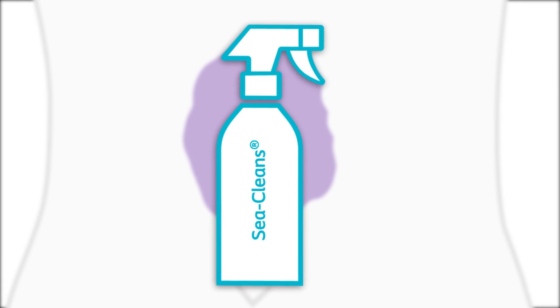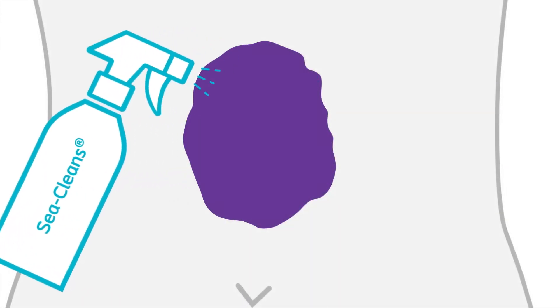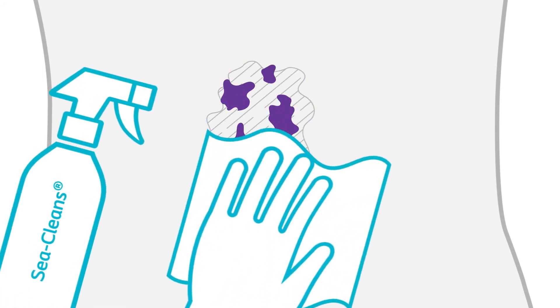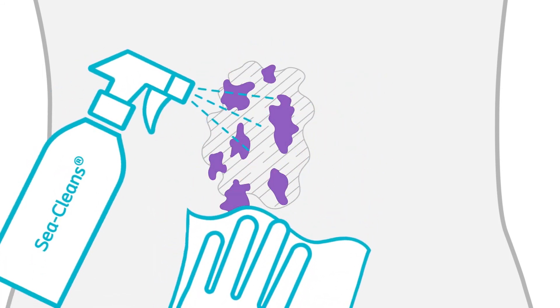To remove Triad, use a pH-balanced wound cleanser such as C-Cleanse. Use the cleanser to soften Triad, then gently wipe to remove without scrubbing. For complete removal, repeat as needed.